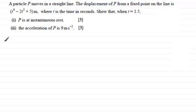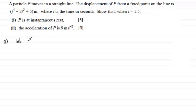To show that p is at instantaneous rest when t equals 1.5, we have the displacement given as a function of time t, so what we have to do to get v is differentiate with respect to t. Let s represent the displacement, which is t to the power 4 minus 2t cubed plus 5.